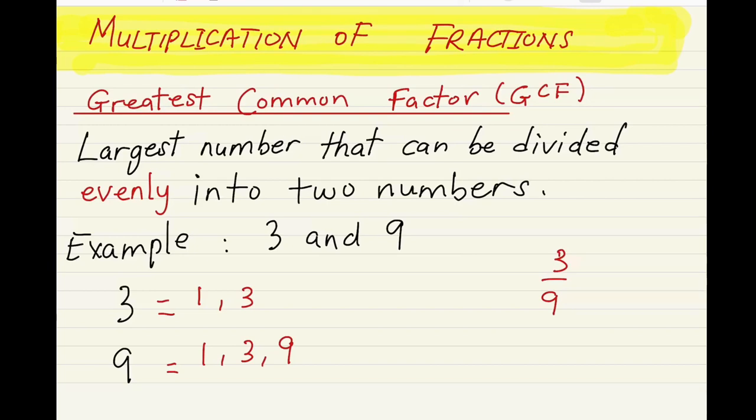Now that we have the factors, we have to find the greatest one. 3 is here and 3 is here, 1 is here and 1 is here. It has to appear on both sides, so we're gonna go with 3 since it's the greatest.